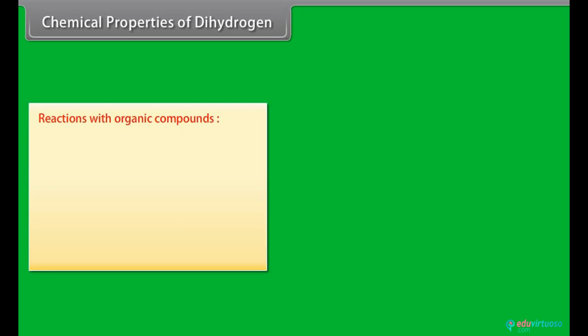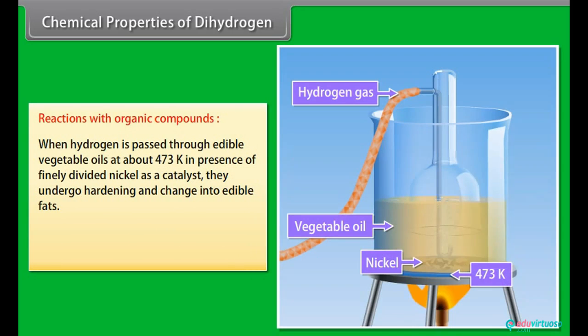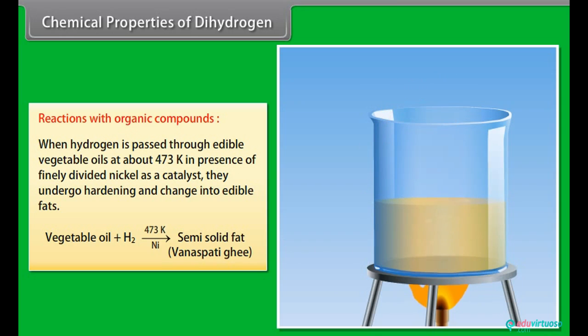Reactions with organic compounds: When hydrogen is passed through edible vegetable oils at about 473 Kelvin in presence of finely divided nickel as a catalyst, they undergo hardening and change into edible fats.